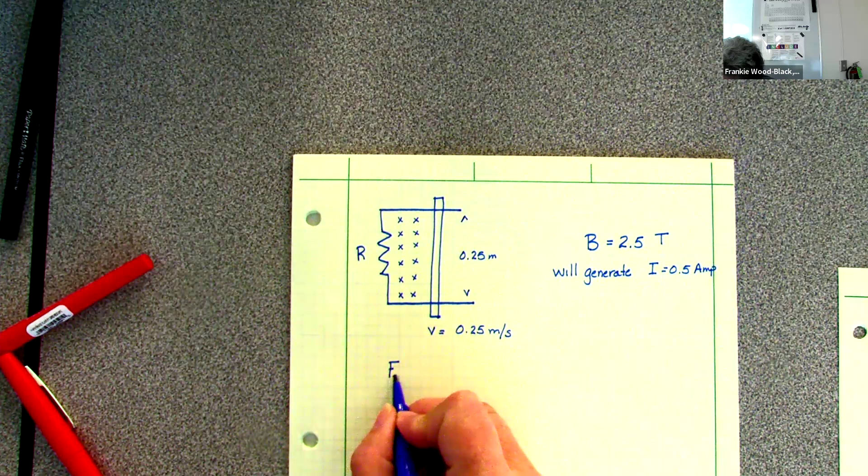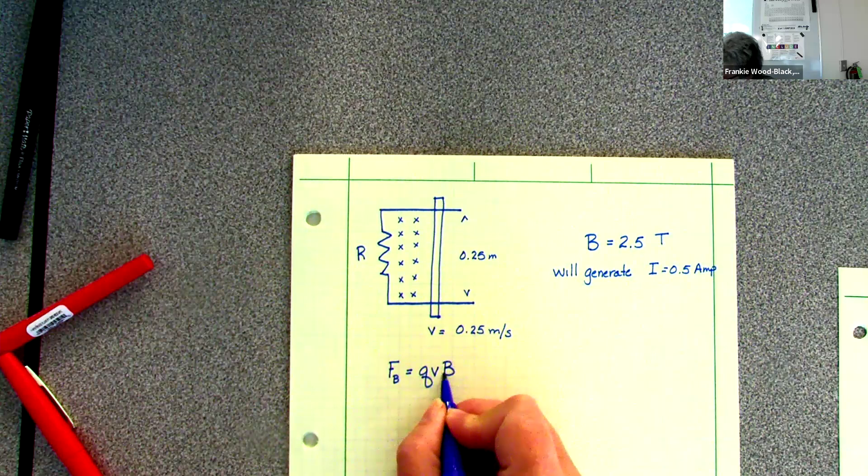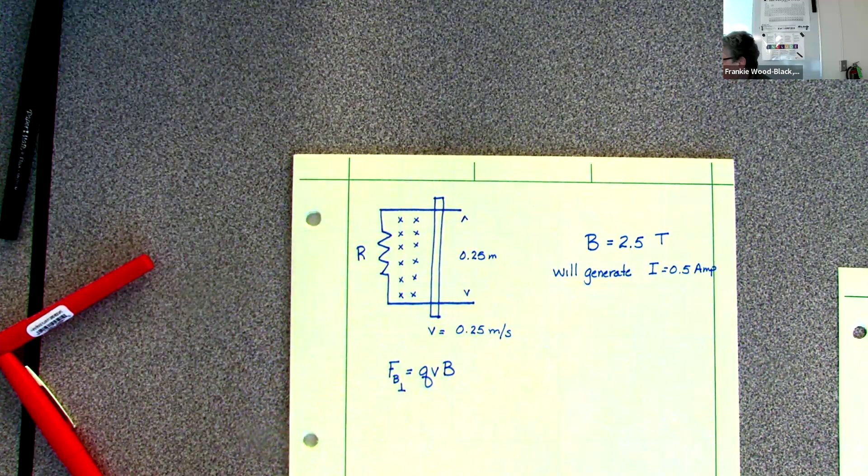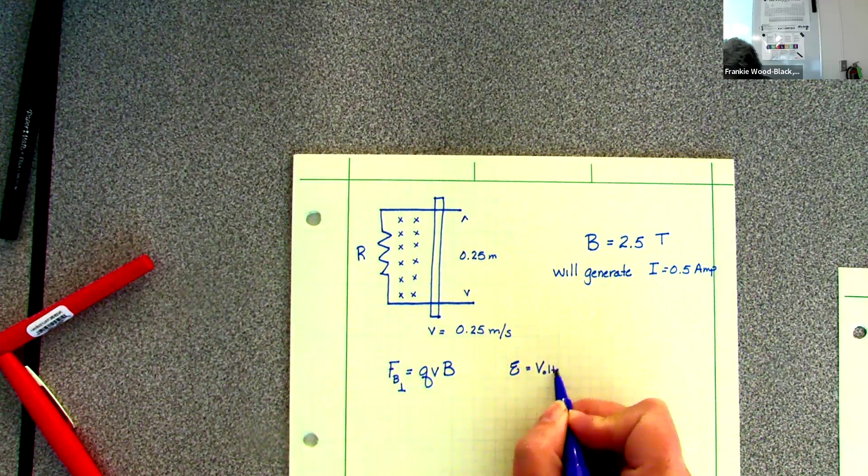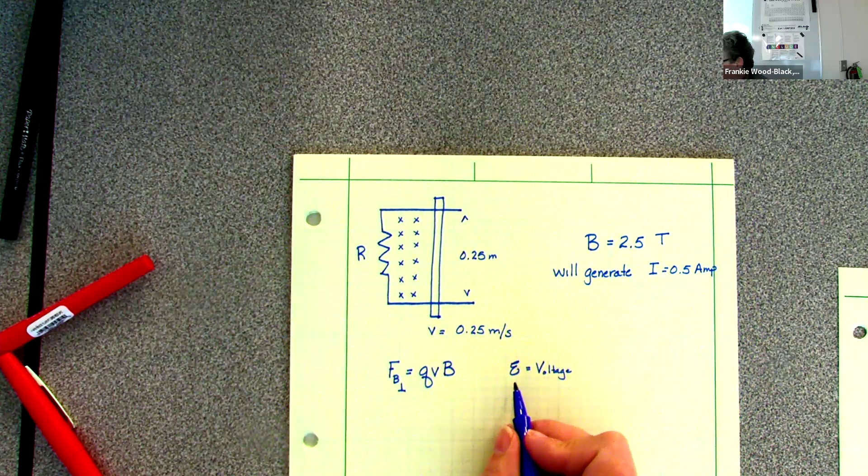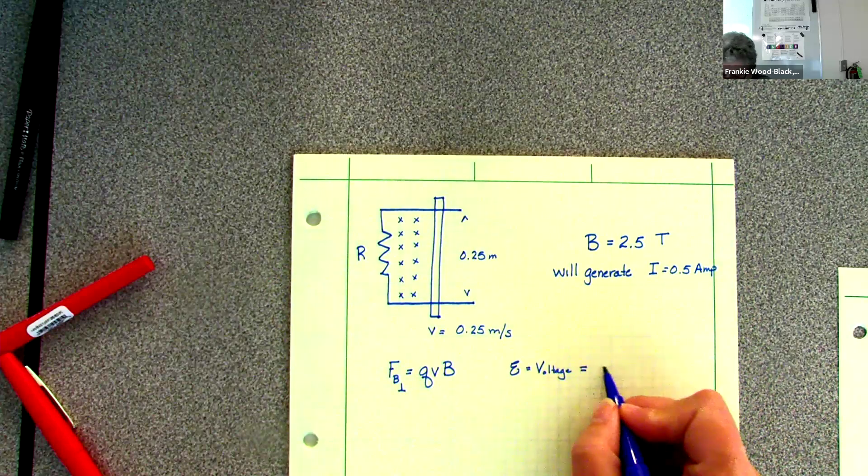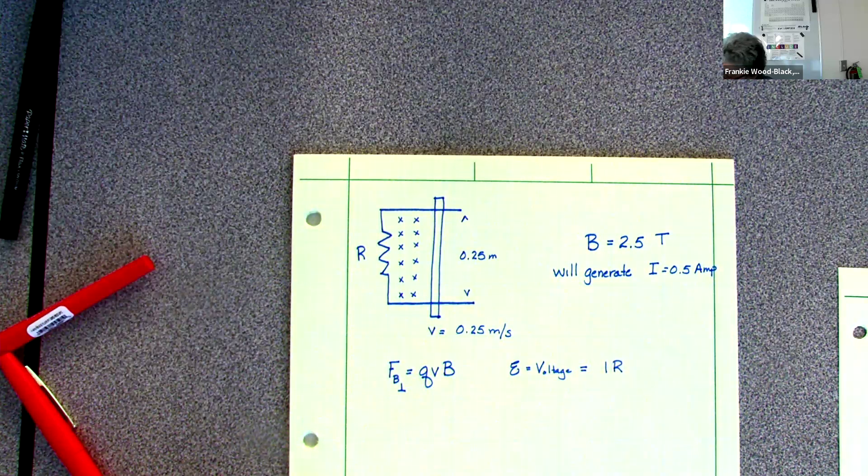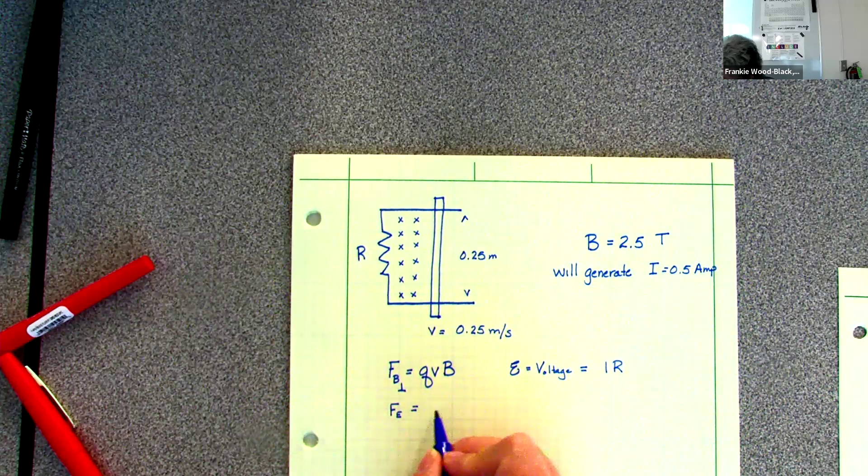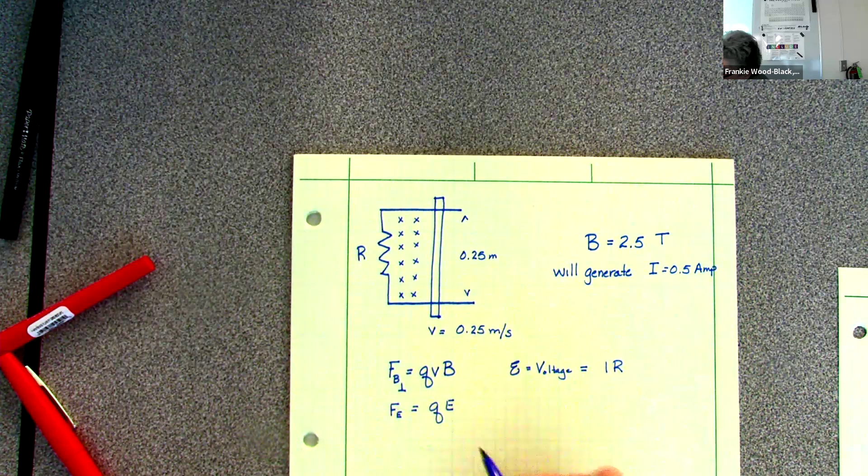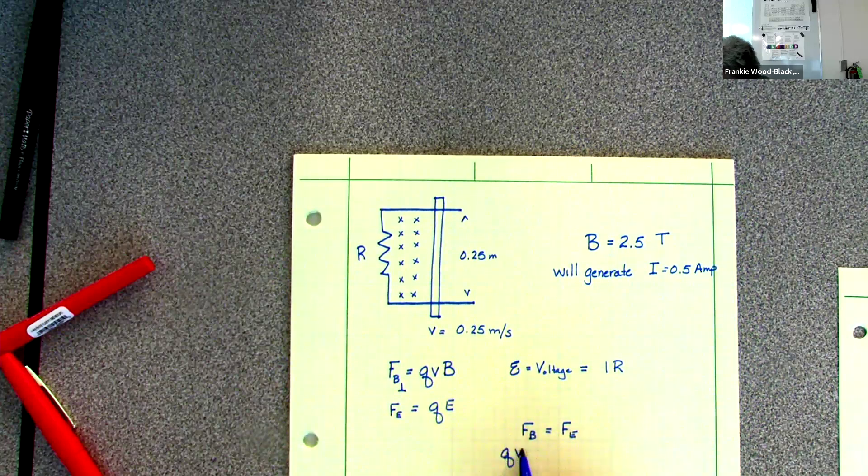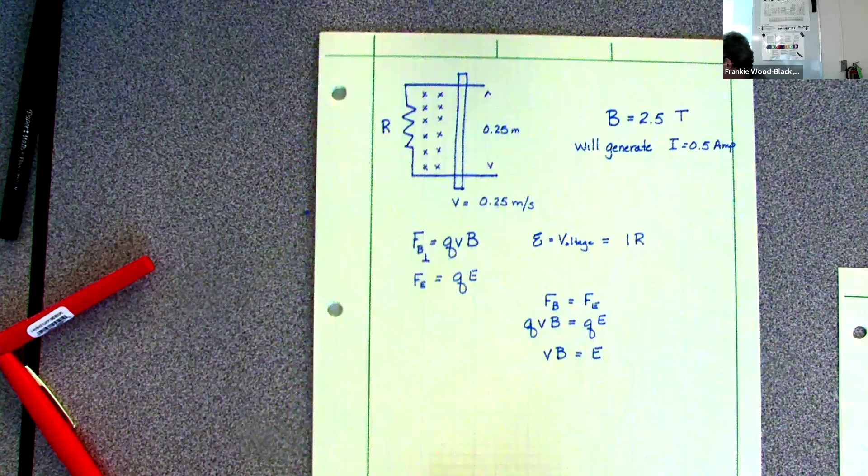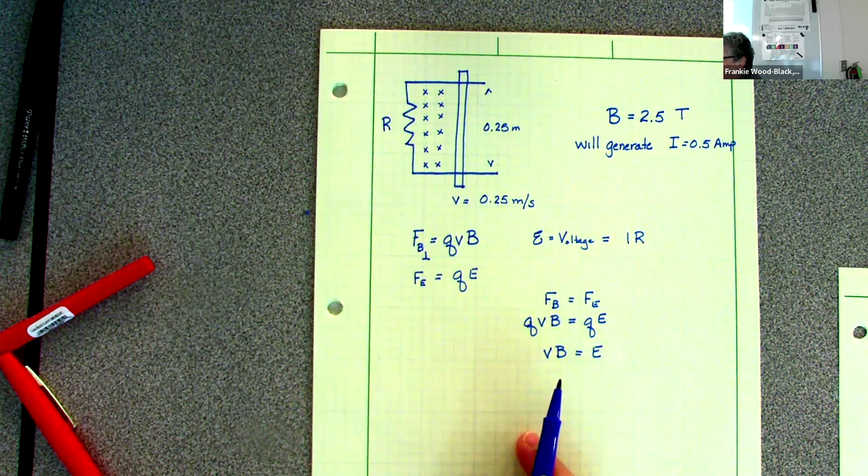So force due to my magnetic field, particularly if I'm perpendicular, is going to be qvB. My EMF or my voltage, which is one of the reasons why we actually switched to E because now we got v's all over the place, is going to equal current times R. And my force due to my electric field is going to give me Eq. And in this system, the force due to the magnetic field has to equal the force due to the electric field. So I get qvB equals qE. Now I get vB equals E. And now you can clearly see the relationship between my magnetic field and my electric field. There's no reason it can't go both directions.